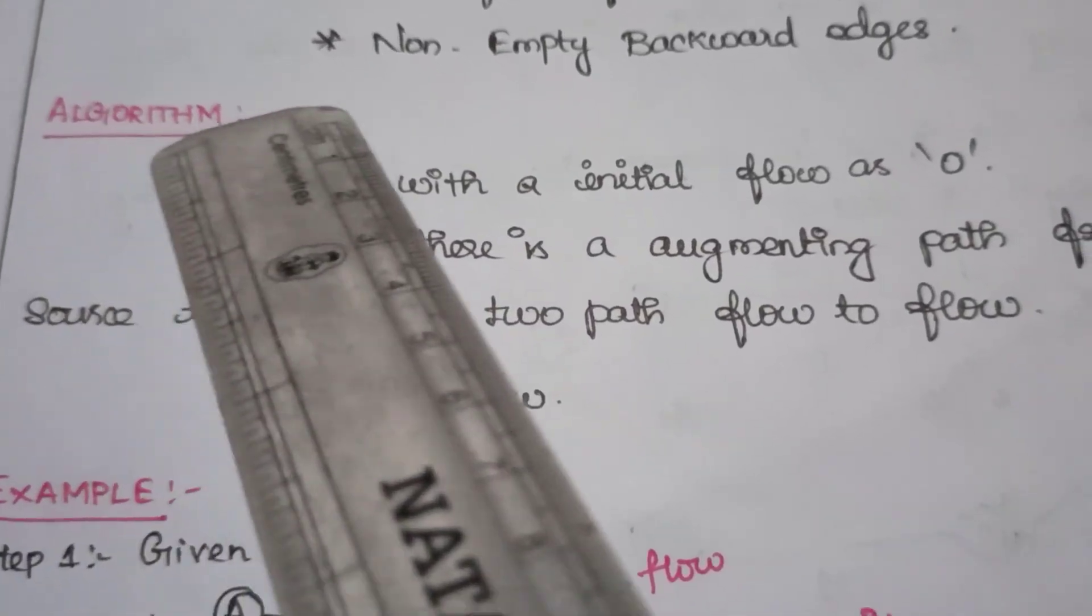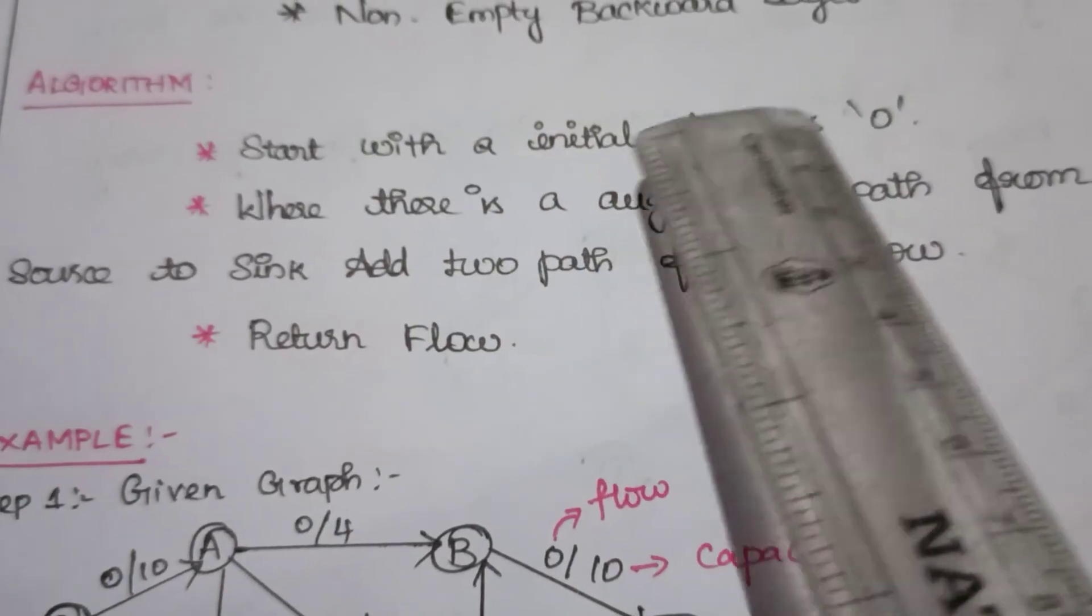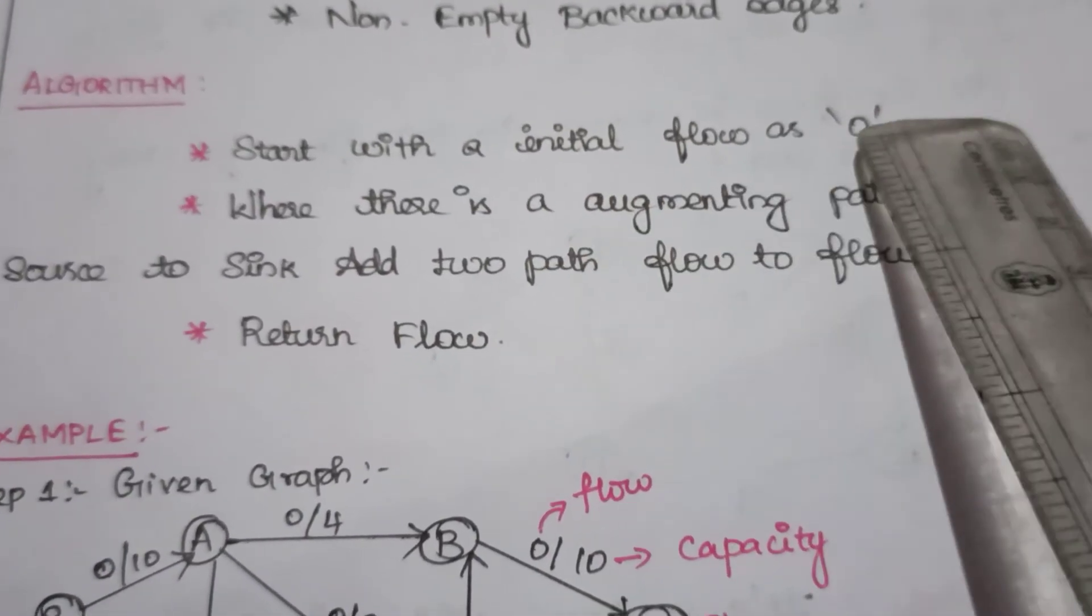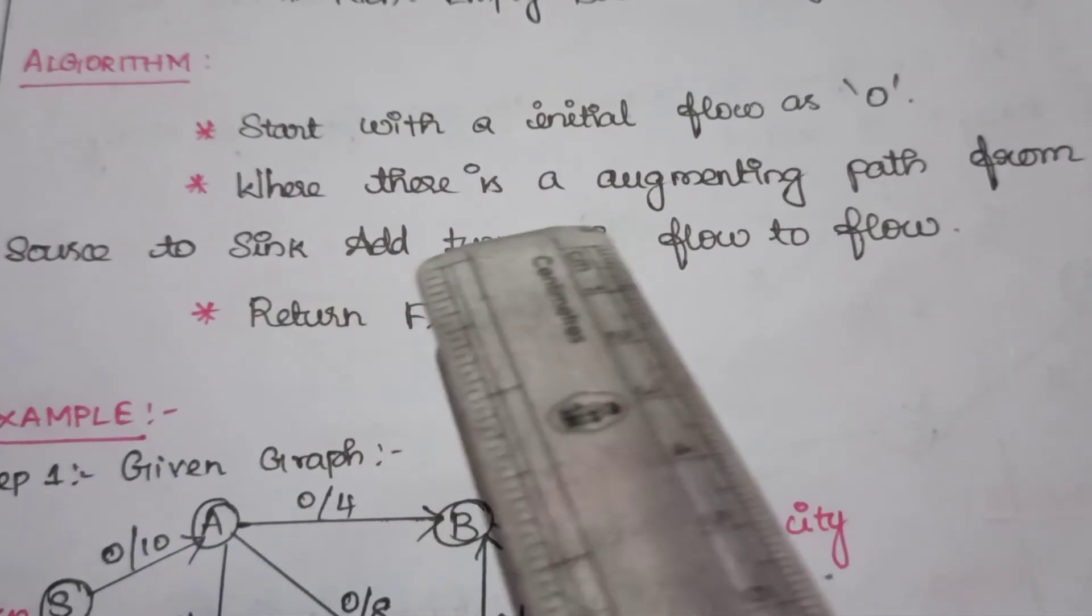Let us move on to the algorithm. First step: start with the initial flow as 0. Initially we are indicating the flow as 0. While there is an augmenting path from source to sink, add this path flow to flow.